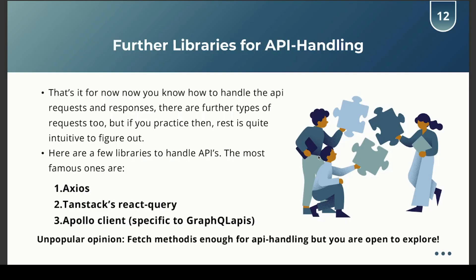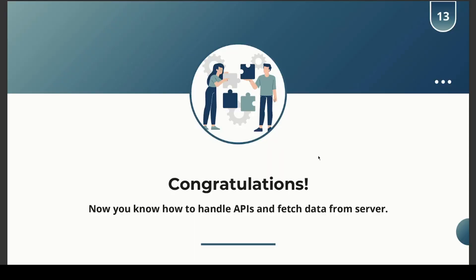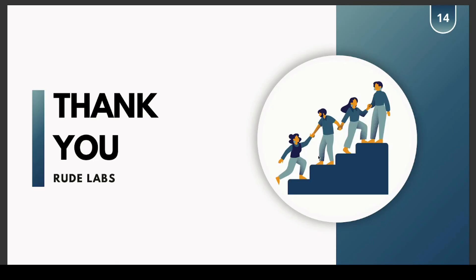Now you know how to handle API requests and responses. There are further request types too, but once you practice, the rest is easy to figure out. Some popular libraries for handling APIs are Axios, TanStack Query, and Apollo Client — though Apollo is specific to GraphQL, not REST. I recommend Axios or simply fetch. Axios is better because it avoids the verbose fetch syntax and automatically parses the JSON body to a JavaScript object. Congratulations — you now know how to fetch data from a server in React!